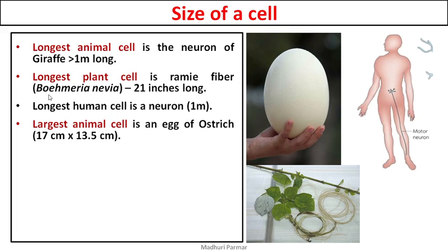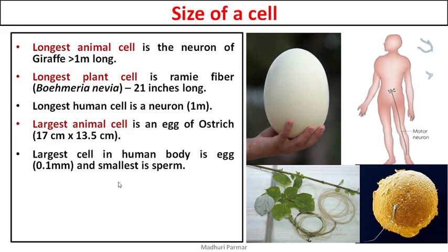This was all about length. The largest animal cell by size is an ostrich egg — about 17 centimeters by 13.5 centimeters. That is how big the largest animal cell is. The largest human cell, or the largest cell in the human body, is an egg cell.